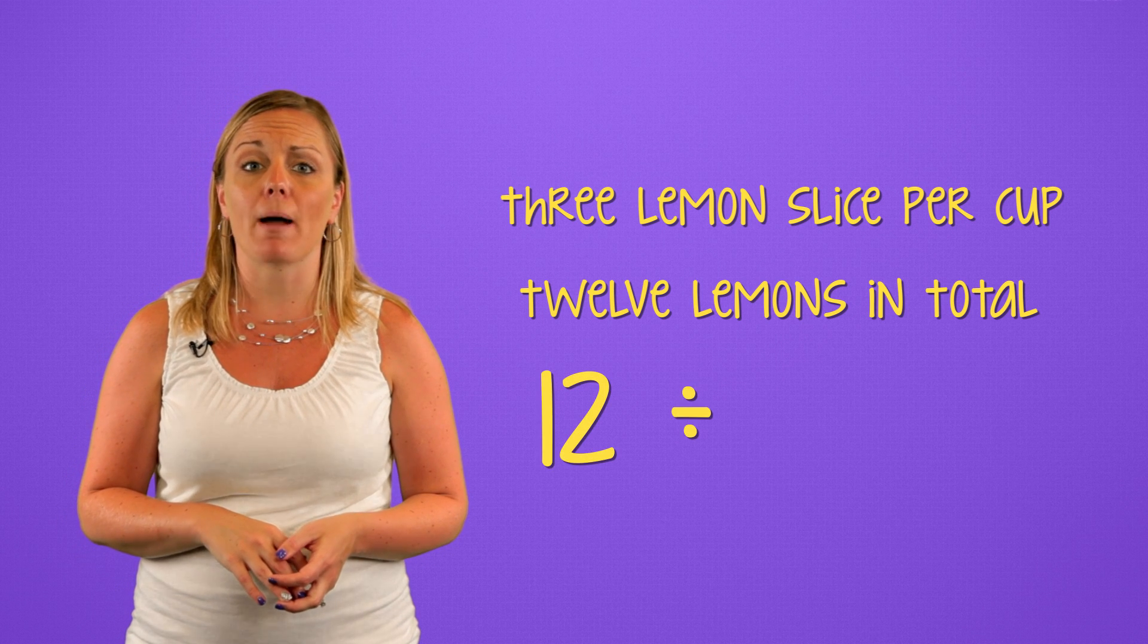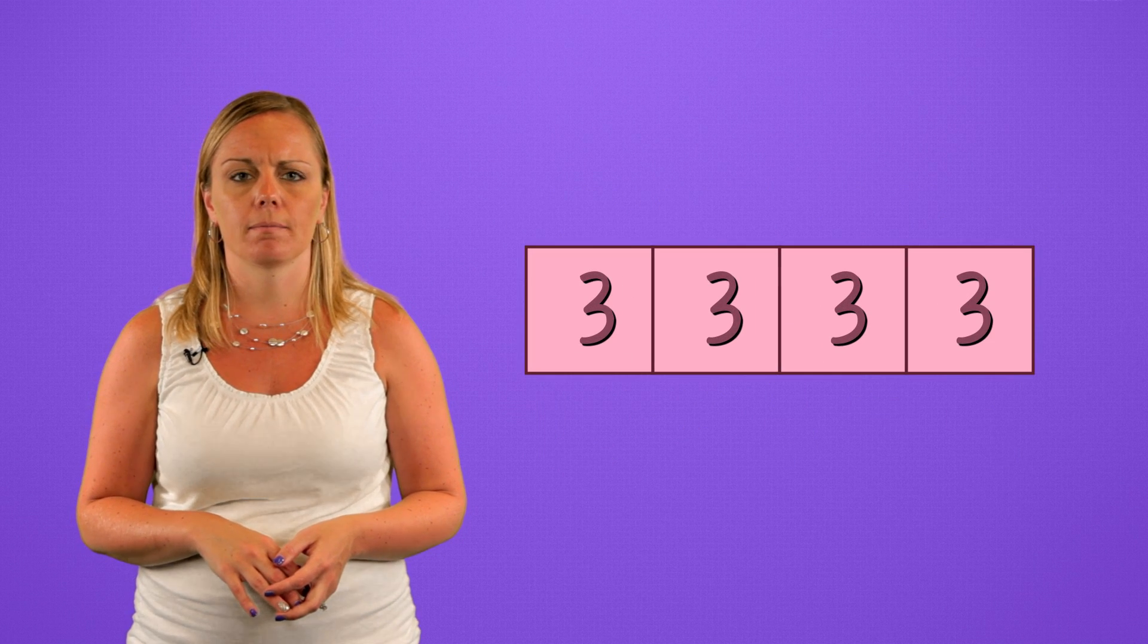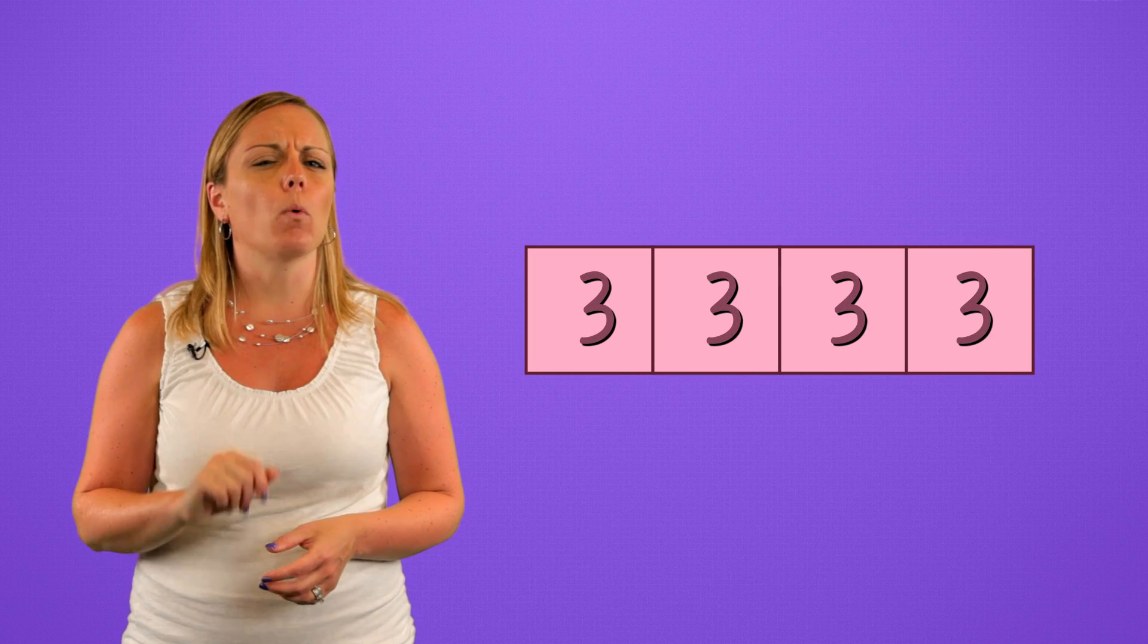So, twelve divided by three equals four. Our tape diagram would look like this. Let's look at one more together.